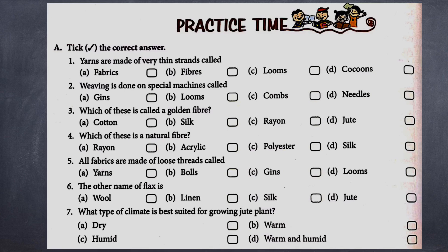I hope these questions are easy for you if you have watched the previous videos carefully. Question number four: which of these is a natural fiber? A) rayon, B) acrylic, C) polyester, D) silk. Fifth question: all the fabrics are made up of loose threads called — A) yarns, B) balls, C) jeans, D) looms.